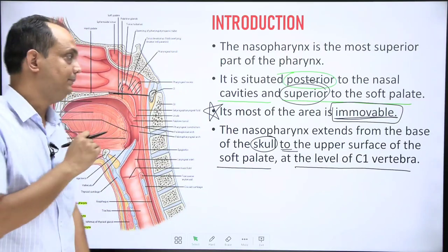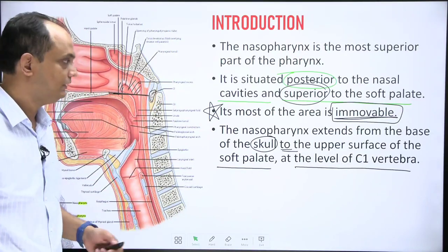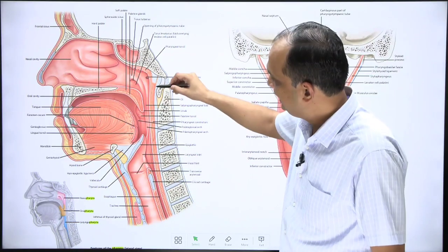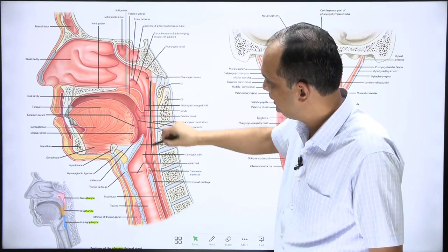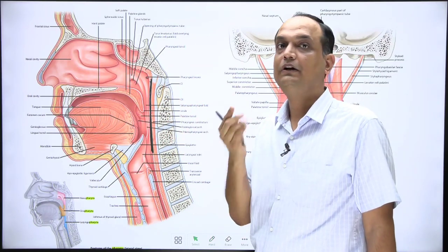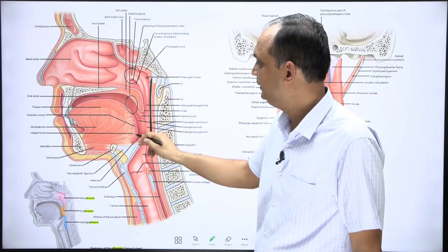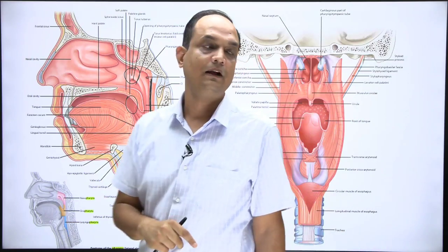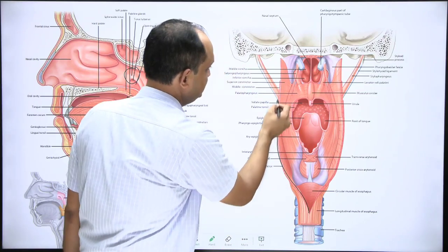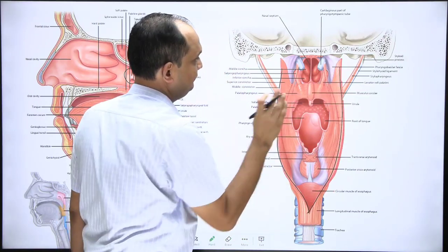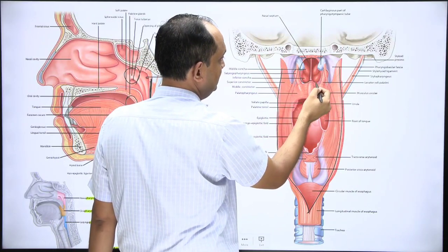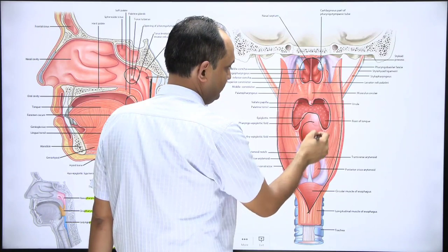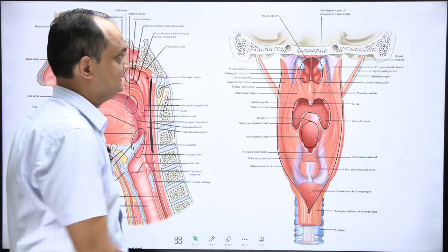If we cut the pharynx from the posterior side — cutting the posterior pharyngeal wall in the midline from the raphe, removing the vertebral column — you can view the pharynx from behind. From this posterior view, you can see the posterior opening of the nasal cavity into the pharynx, the posterior opening of the oral cavity into the pharynx, and the opening of the larynx.